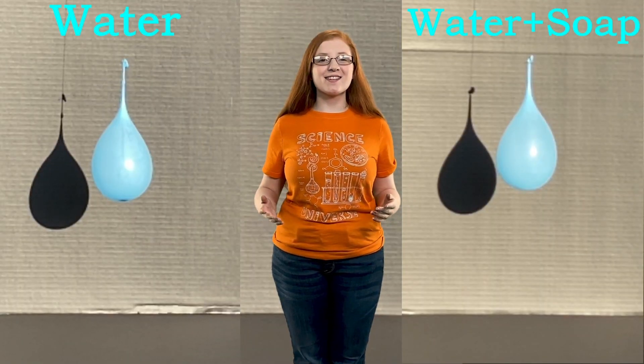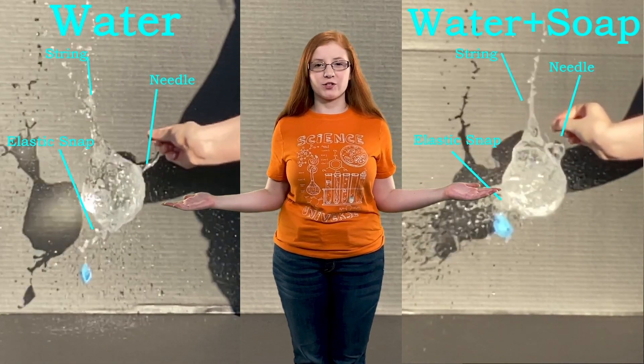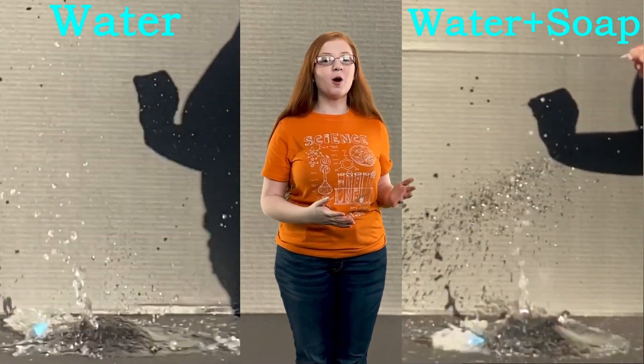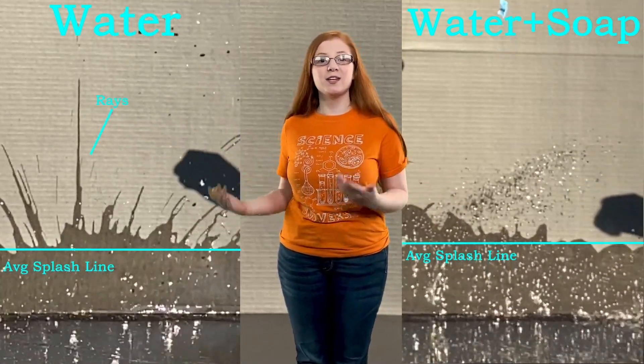You can actually see this in this slow-mo video. The one on the left has only water inside, and the one on the right has a soap and water mixture inside. The water by itself holds shape, while the other not that much, and the soap and water mixture's splash pattern is more evened out, while the plain water has raised because of the cohesion.